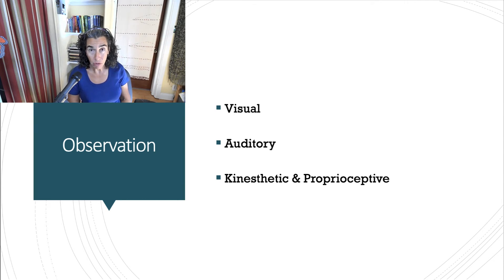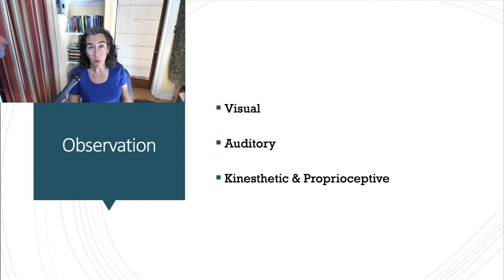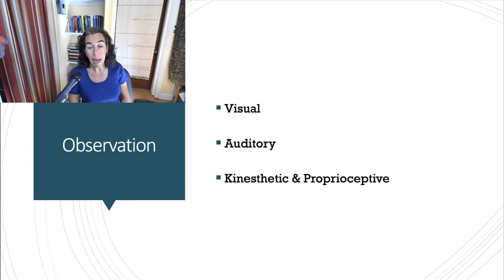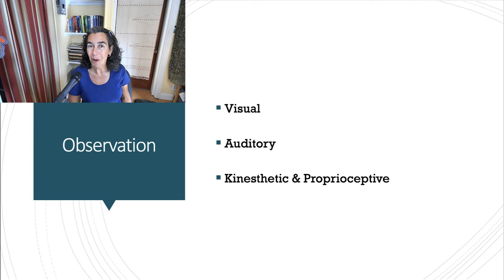We also want to use our auditory system. We can often hear the client's respiration, which can be a clue to discomfort or calm. Alternately, any vocalizations they make — if they're moving and they're grunting, or sighing — and any verbal communication. Finally, we consider kinesthetic and proprioceptive observation: this is qualitative information about how the client is moving, any movement patterns, any synergies, and their responses as we enter into therapeutic handling — the feedback to what we're doing. All three types of observation are important.